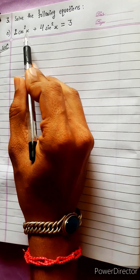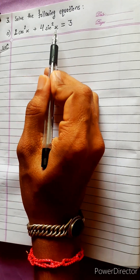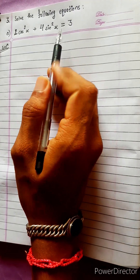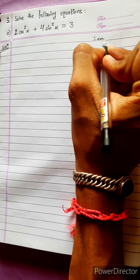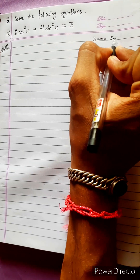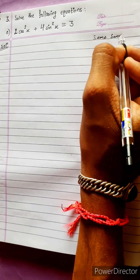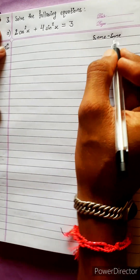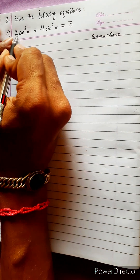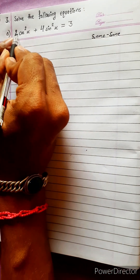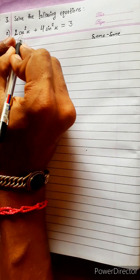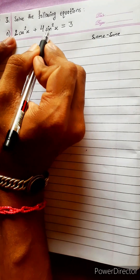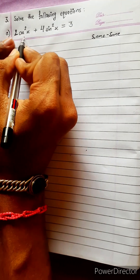Solve the following equations: 2cos²x + 4sin²x = 3.